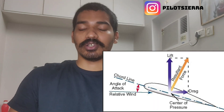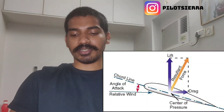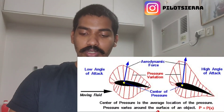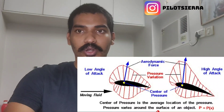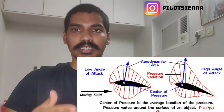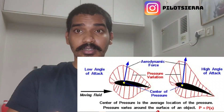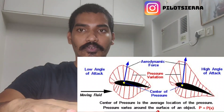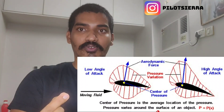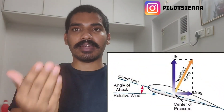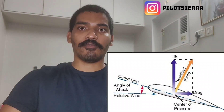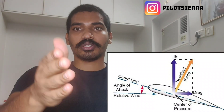The next topic is center of lift, or center of pressure. As we know, there's a pressure differential across the wing or aerofoil which causes lift. There's a pressure variation all across the aerofoil, and if we consider the average location of all the pressure acting on that wing or aerofoil, that particular point is your center of pressure. Lift and drag are the two forces taken into account in this case.